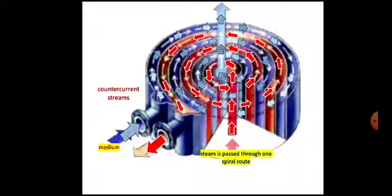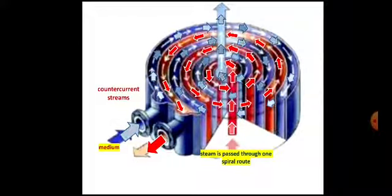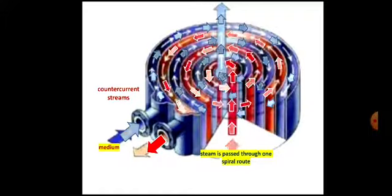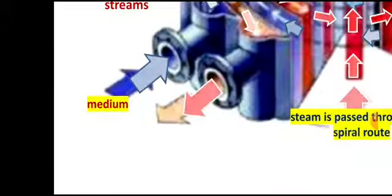The red arrows show the circular path that steam follows — it enters inside the most internal part of the coil and takes a circular loop. The direction of medium and direction of steam are opposite to each other, which is why it is called counter-current streams.